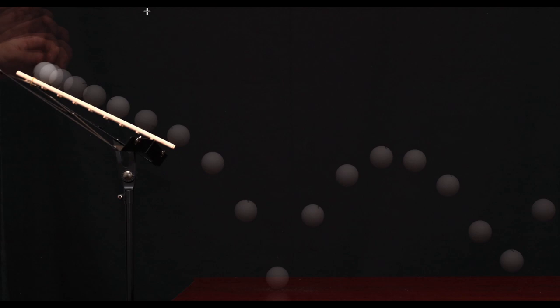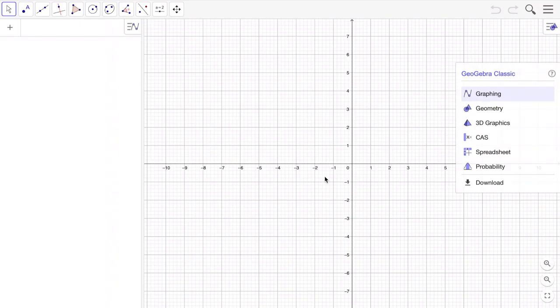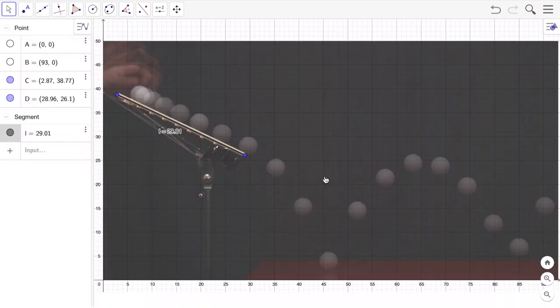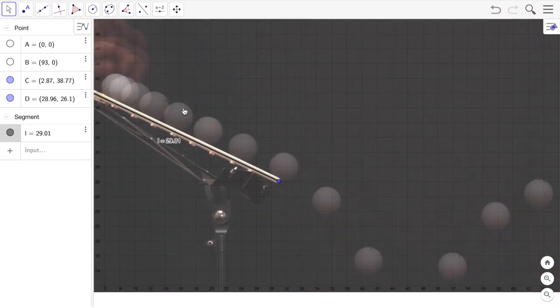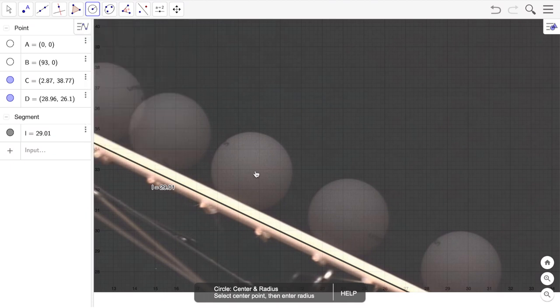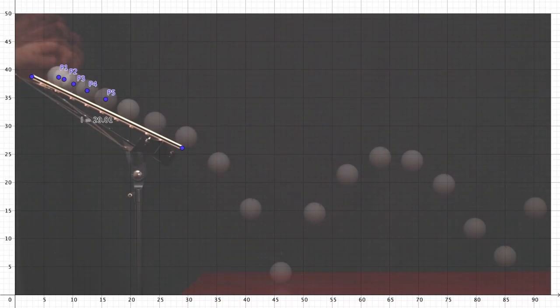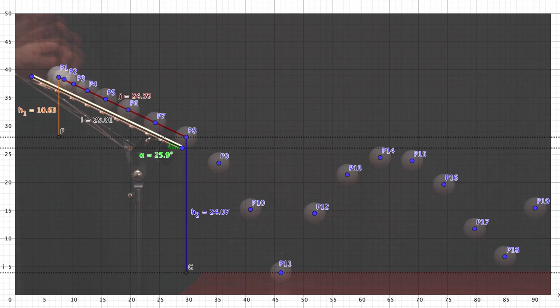The second step is to establish the coordinate system and for that I have used a program called GeoGebra which allowed me to later on plot the equations of motion. I have set the lower left corner of the image in the origin of the coordinate system and I have adjusted the size of the photo such that the length of the ramp measures 29 cm as it does in reality. Then I have determined the position of the ball using the circles constructed from the center point and the radius. From there I could proceed with determining the angle of the incline and its height as well as the height of the ramp with respect to the table.